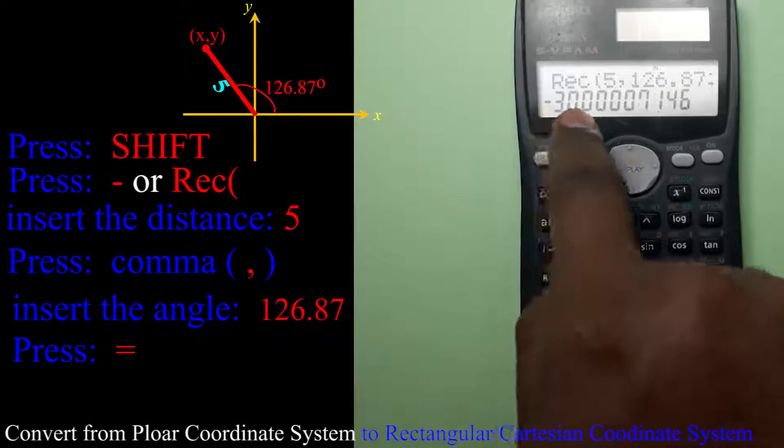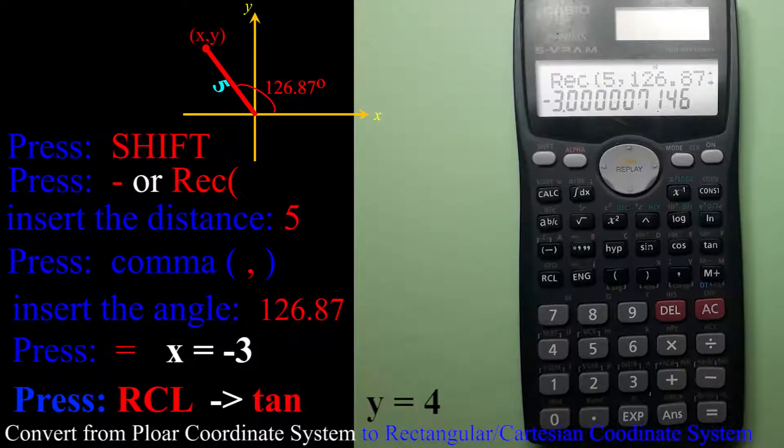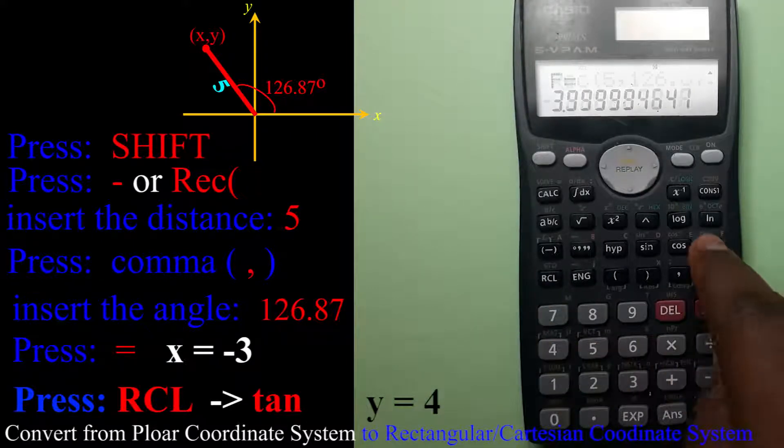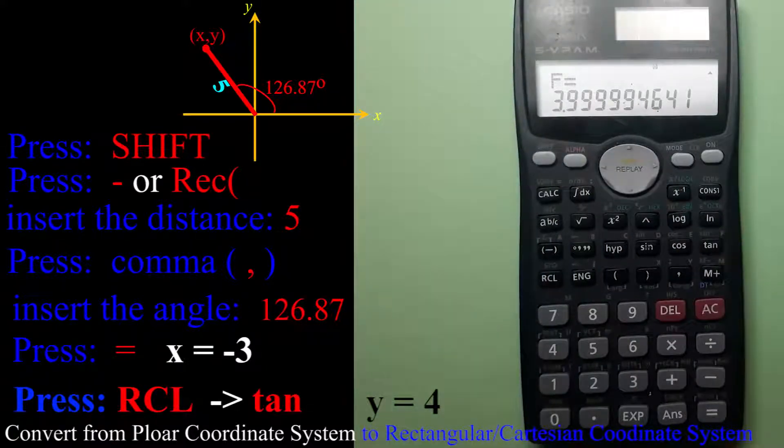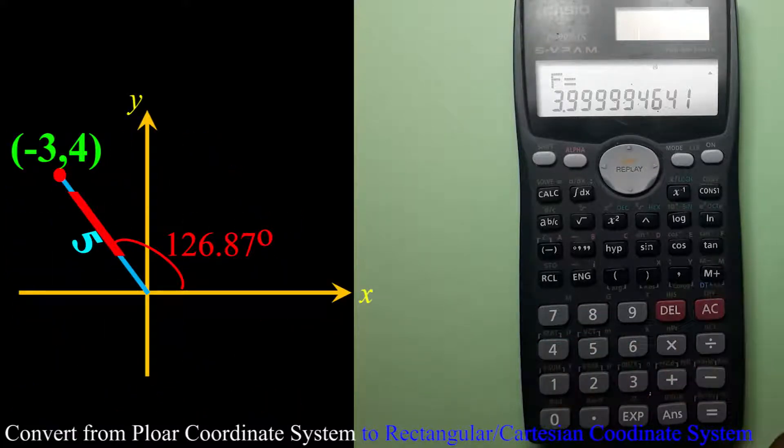Then I will say enter. It says negative 3.000, almost 3. And to know the Y coordinate, I will say Recall Tan, and I'll get 3.9999, almost 4.